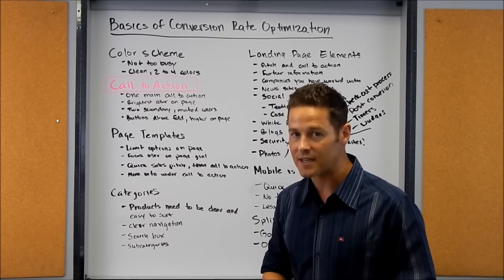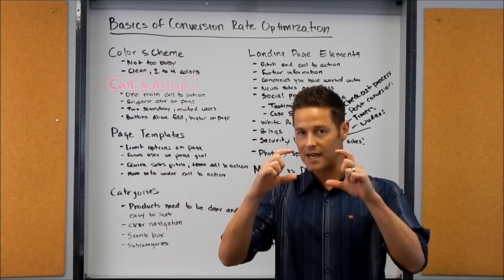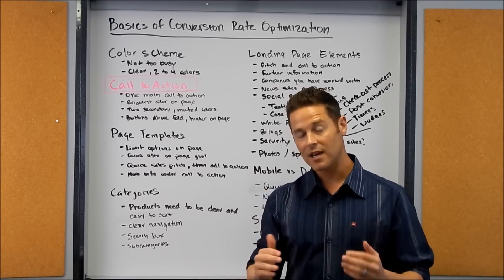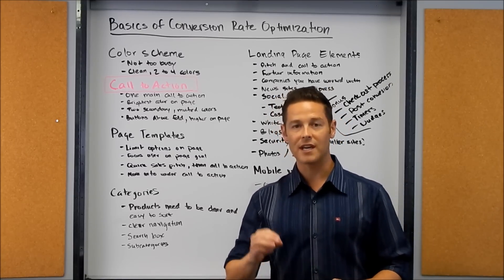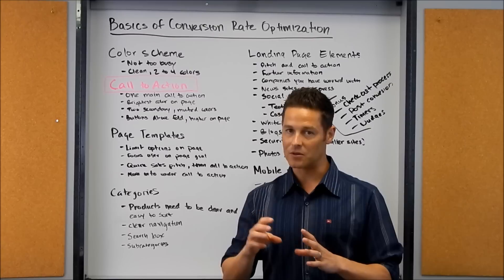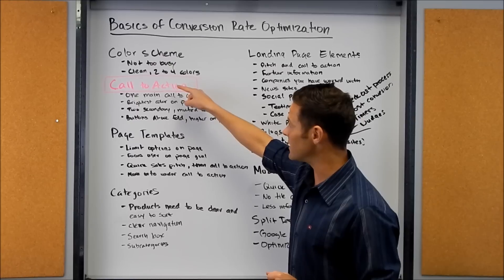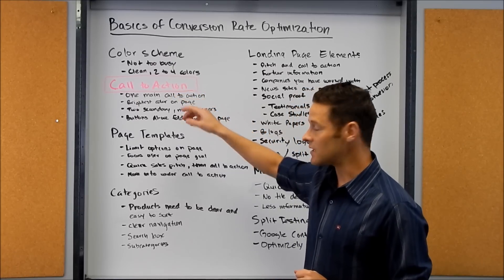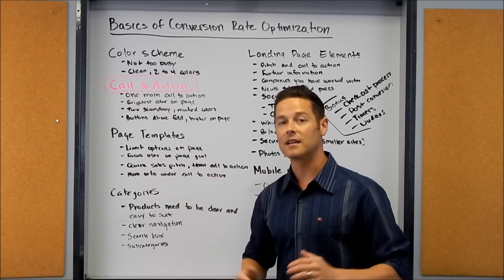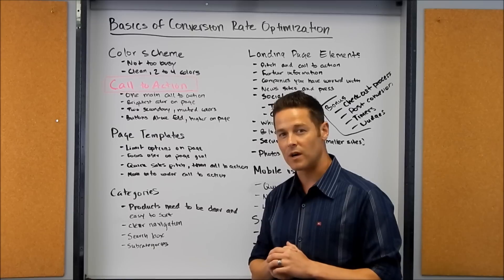Make sure that your call to action is brighter than everything else on the page. When your user lands on the page, you want them to see your call to action front and center so they know the main goal. Every single web page should only have one main goal and then potentially two secondary goals. Those secondary goals can also use brighter colors, but they shouldn't be as bright as your main call to action — they should be more muted and not detract from the overall light color scheme.